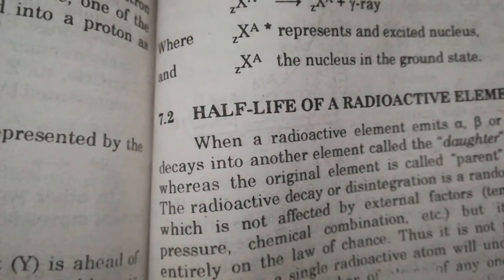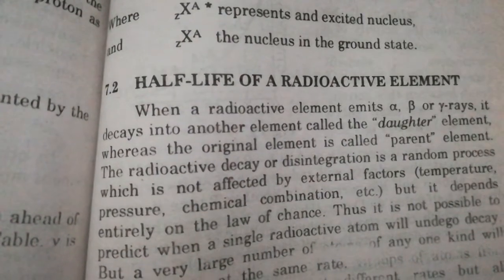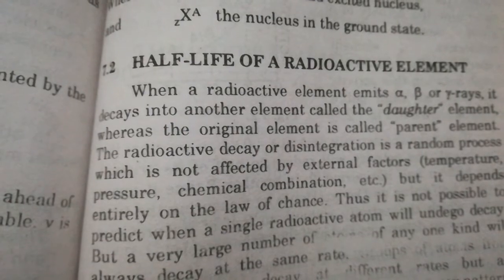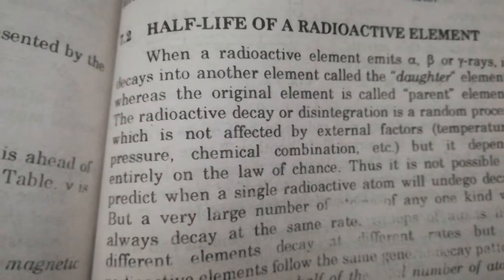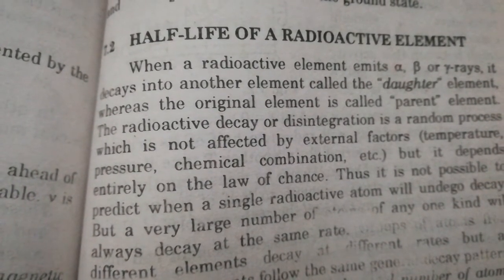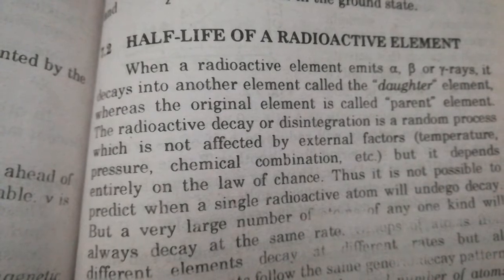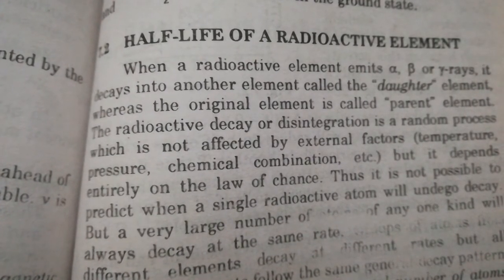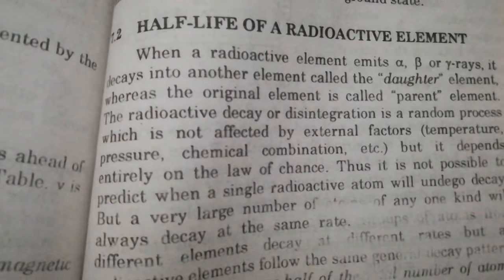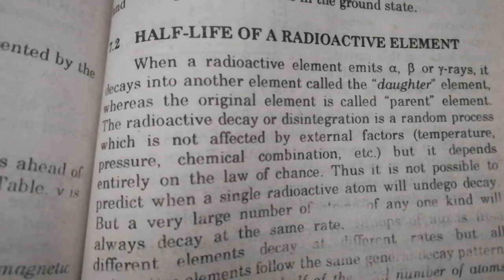Bismillahirrahmanirrahim. Students, today is our 18th lecture of General Physics. We have to discuss Article 7.2: Half Life of a Radioactive Element. This radioactive element is converted after the emission of radiation, and this radioactive element is naturally occurring.